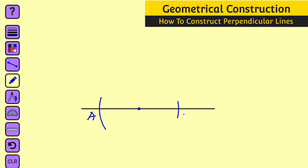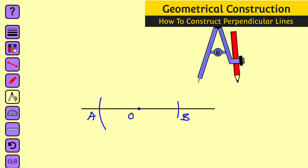Now let me name the intersections as A and B. You should also notice the point where the pointer of your compass was placed — let me call it O as the origin. Next, bring back your compass.